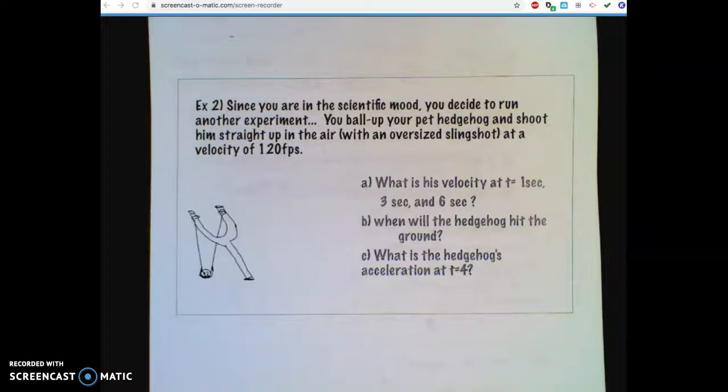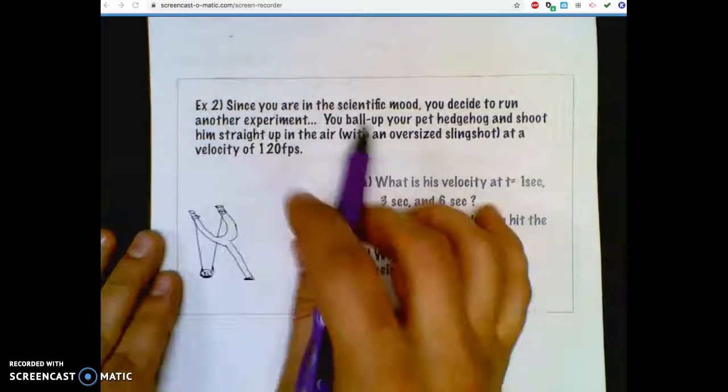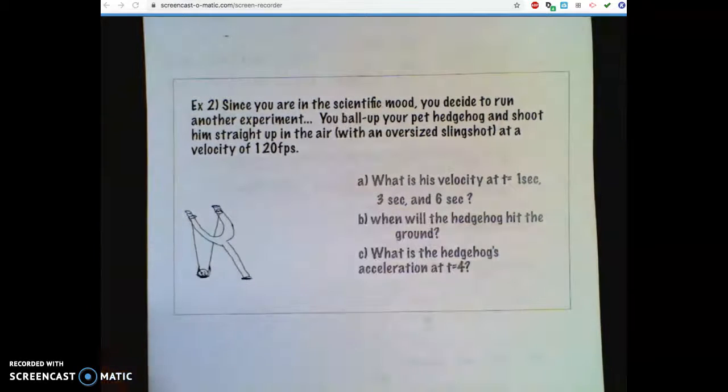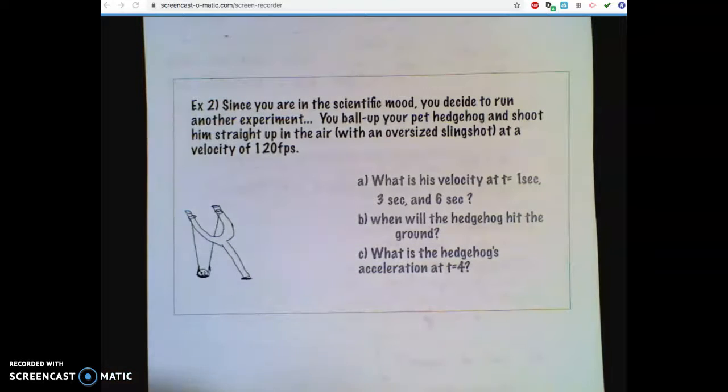Alright, so here is our second example for the guided notes on projectile motion and such. Example two: Since you're in a scientific mood, you decide to run another experiment. You ball up your pet hedgehog and shoot him straight up in the air with an oversized slingshot. See the picture here? And you shoot it at an initial velocity of 120 feet per second. It's a good slingshot.